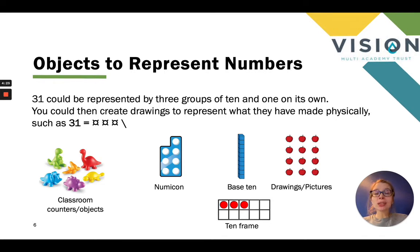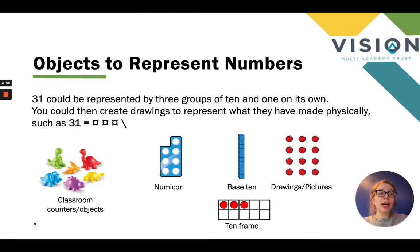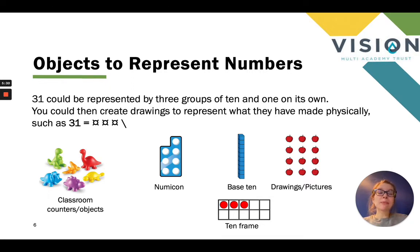On here I've got three circle symbols which represent a 10 and one line on its own represents the one. I've also put examples including dinosaurs, counters, and classroom objects — anything in the room can be used to count. Resources like Numicon, Base 10 and the tens frame are all valuable. It's also important that children can draw their own pictures to represent numbers, but also be able to recognise given drawings. For example, where it's shown with apples, children should be able to count either in groups or individually to work out how many objects there are. Use a range of different objects to expose children to as many different representations as possible.